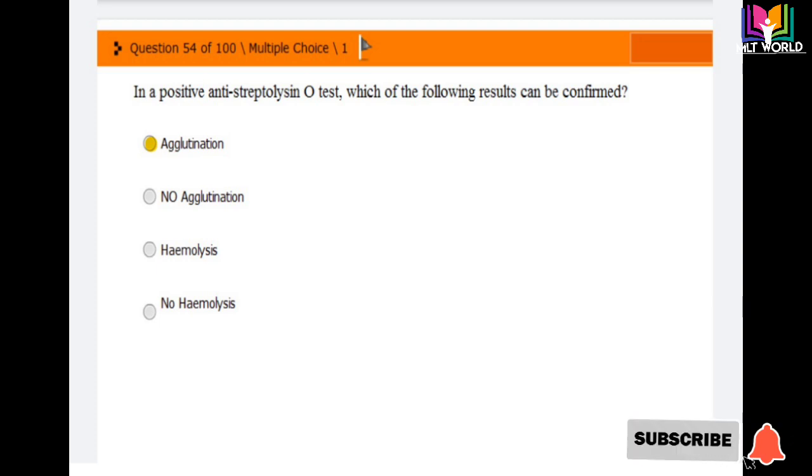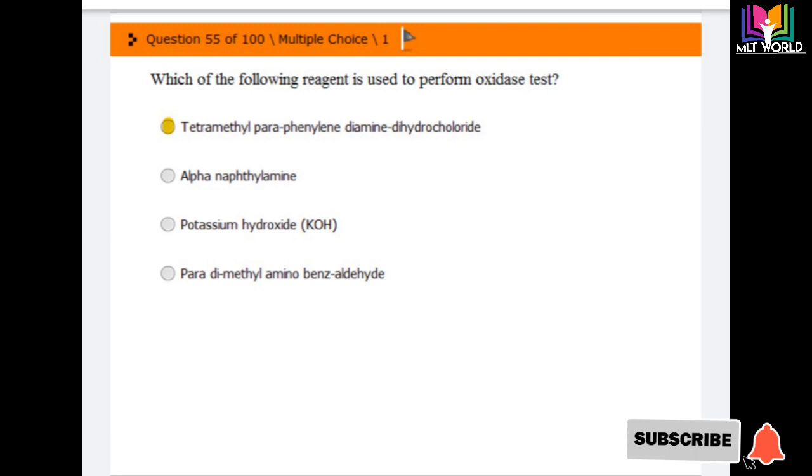Question number 54: In a positive anti-streptolysin O test, which of the following results can be confirmed? Options are agglutination, no agglutination, hemolysis, and no hemolysis. The correct answer is agglutination. In a positive anti-streptolysin O test, there will be agglutination in the results.